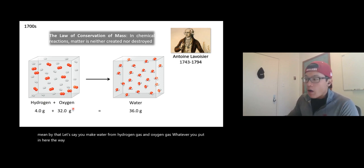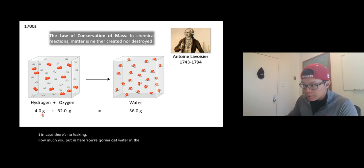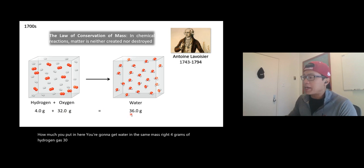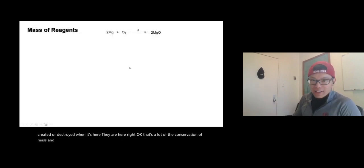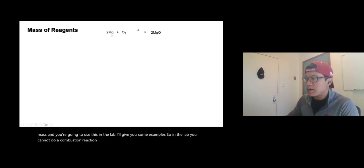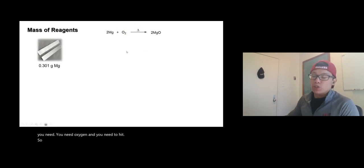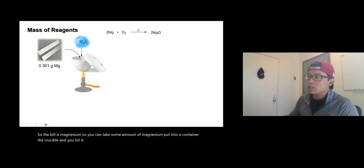What does that mean? Let's say you make water from hydrogen gas and oxygen gas. Whatever you put in — the mass of hydrogen gas and oxygen gas — will show up in the water, as long as there's no leaking. For example, 4 grams of hydrogen gas and 32 grams of oxygen give you 36 grams of water. Atoms and molecules cannot be created or destroyed. That's the Law of Conservation of Mass.